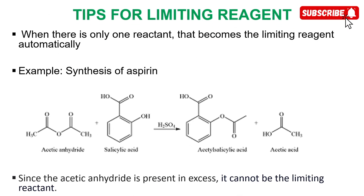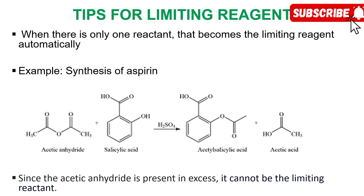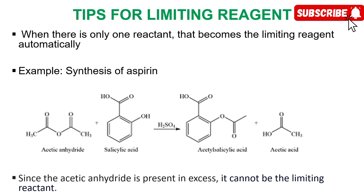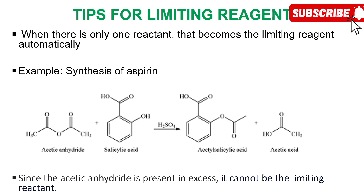Another example is the synthesis of aspirin, where we have salicylic acid and acetic anhydride. Acetic anhydride is present in excess and is not part of the limiting reagent, so in this case salicylic acid is automatically the limiting reagent. We use it to calculate our theoretical yield.